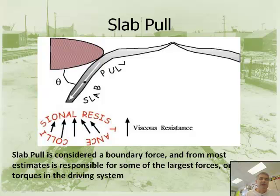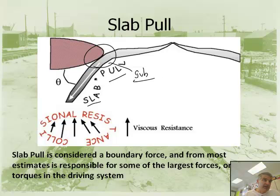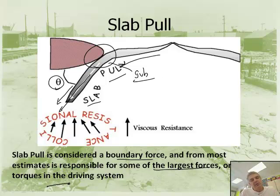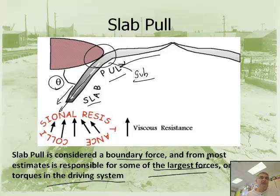The next force is called slab pull. This occurs at a subduction zone. Because of gravity, as more and more material subducts it gets heavier and heavier, which drags the whole plate. The angle of subduction is measured by theta — a shallower angle is what created the Rocky Mountains. Slab pull is considered a boundary force, and for most estimates it's responsible for some of the largest forces driving the system. It could also be an additional way to understand plate movement, not just an alternative.